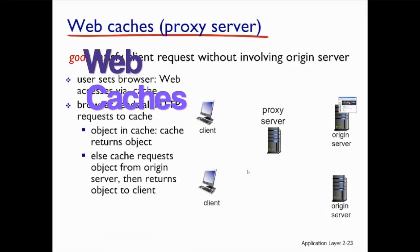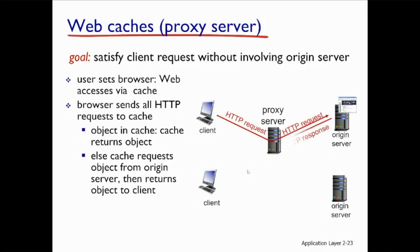Whenever we have a request, a client has requested to Amazon. Who handles the request to Amazon? The proxy server. Assuming no copy of a similar request is available at the proxy server, the HTTP request will be forwarded to the original server. The original server will send the requested object to the proxy server, and the proxy server will forward it to the client machine.